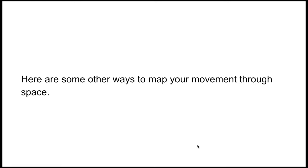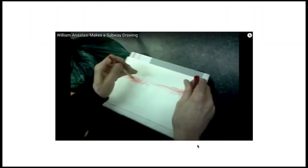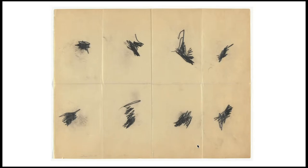Here are some other ways to map your movement through space. William Anattasi. This piece is called Subway Drawing. It was made in 2011 and it's ballpoint pen and pencil on paper. Anattasi makes these drawings while he rides the subway in New York. He puts a piece of paper on his lap and lets the subway move his pen along the paper. These drawings become maps of the subway's movement. These are called pocket drawings, made in 1969. Anattasi folded sheets into eight squares, making them small enough to fit into his pocket. As he walked, he held a tiny soft pencil against the exposed paper inside the cramped space of his pocket. The resulting marks graph his movement.